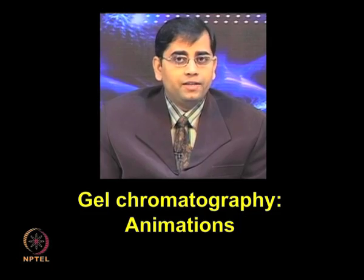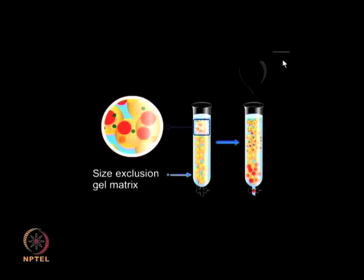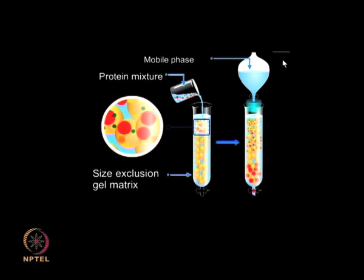The size exclusion gel matrix filling the gel filtration column consists of a highly hydrated polymeric material, commonly dextran, agarose, or polyacrylamide. The protein mixture — a mixture of unpurified proteins of different sizes — is applied on top of the column. The mobile phase elutes proteins using a suitable buffer of appropriate ionic strength that will not affect the properties of the proteins being purified.